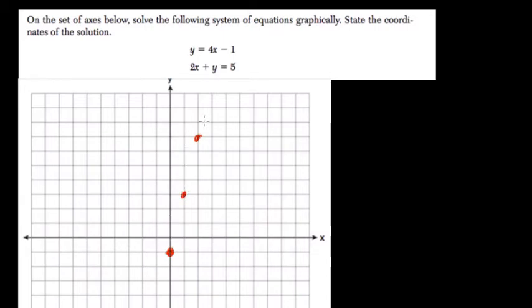Up 4, over 1. And then we can go back, down 4, back 1. So we have this first line, relatively easy to graph, right?